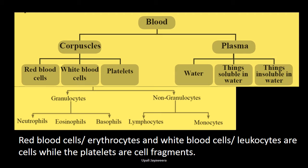White blood cells can be divided into two types: granulocytes and non-granulocytes. Granulocytes can be divided into three as neutrophils, eosinophils, and basophils. Non-granulocytes can be divided into two as lymphocytes and monocytes. Plasma consists of water, things soluble in water, and things insoluble in water. Red blood cells (erythrocytes) and white blood cells (leukocytes) are cells, while platelets are cell fragments.